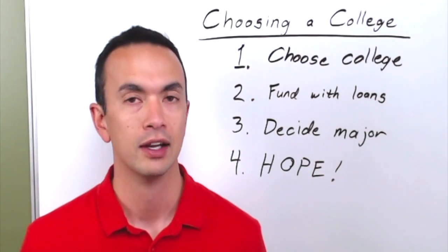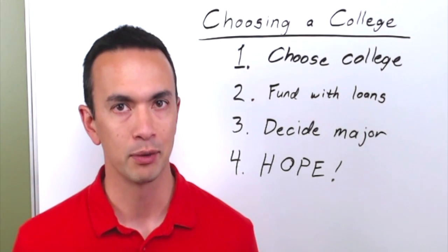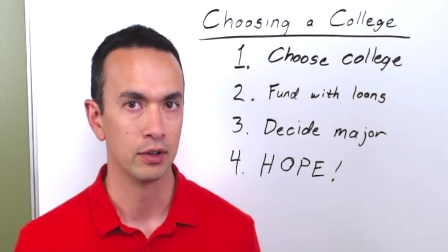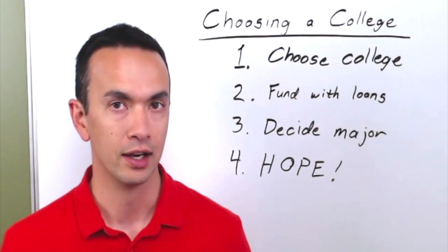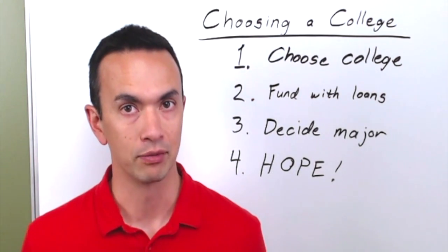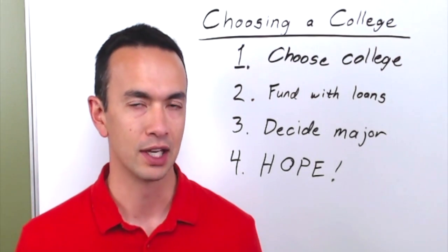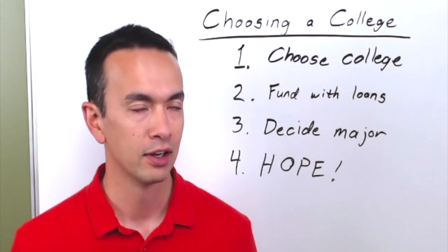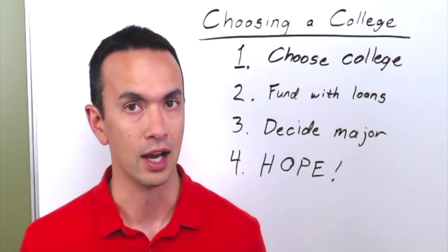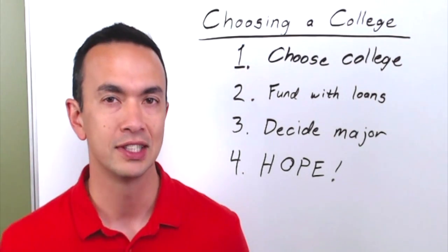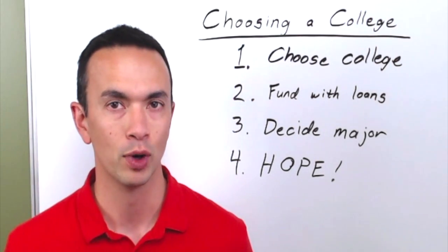You use 529 money, but then whatever the difference is, you fund that with student loans. Once you get there, you figure out what your major is going to be - you don't decide your major until later. And then the last step is just, 'I hope it all works out.' Instead, let's think of a more prudent way of figuring out what college to go to.